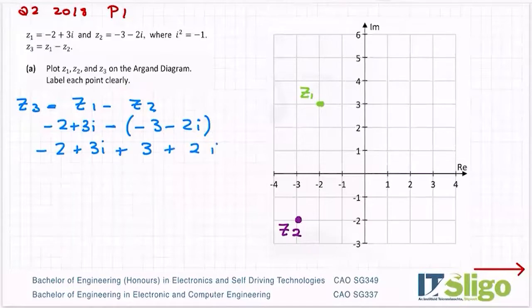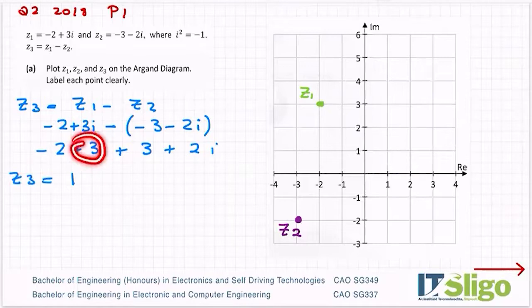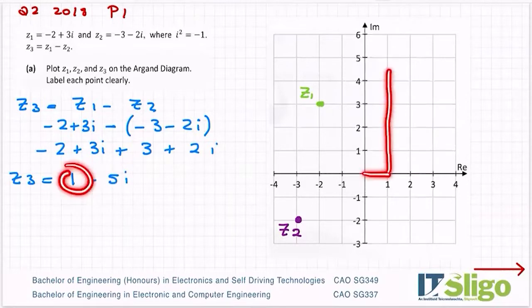OK, so minus 2 then. How do you add or subtract complex numbers? Real to real. So minus 2 plus 3 is 1. And then I have plus 3i plus 2i is plus 5i. So I have 1 on my real axis and then up to 5i on my imaginary axis. So that's my Z3 up there.